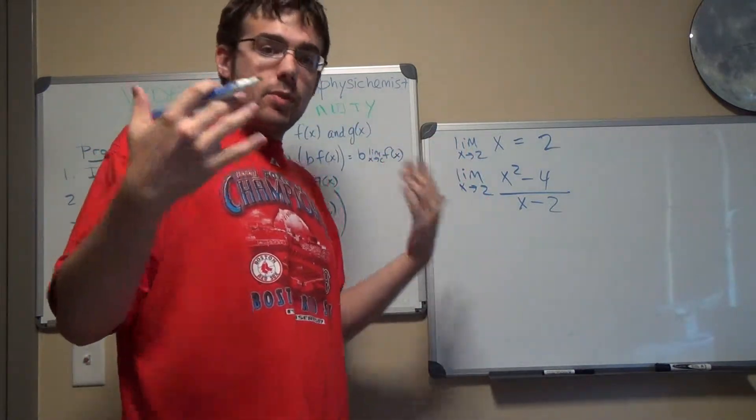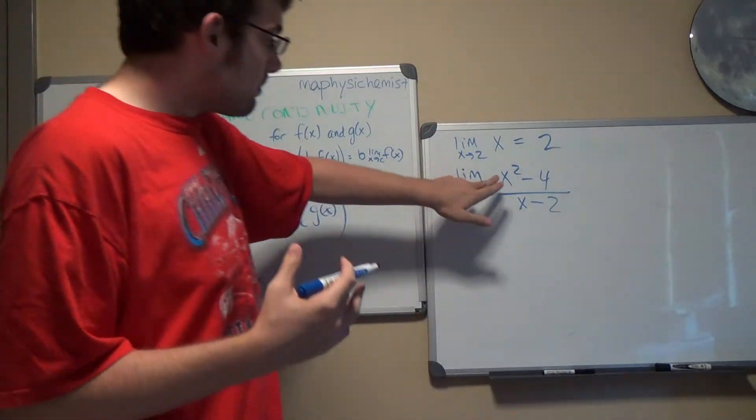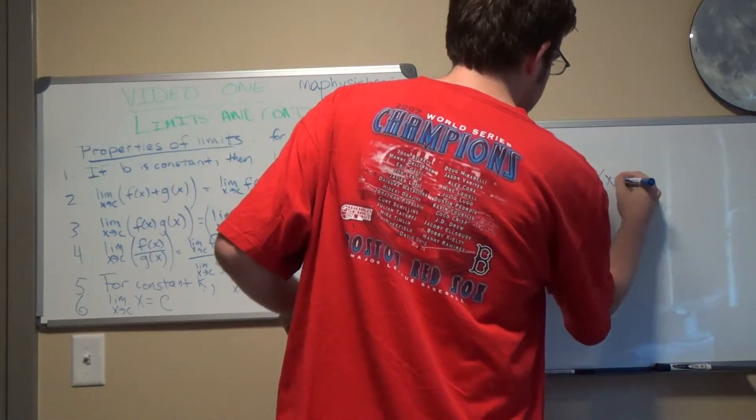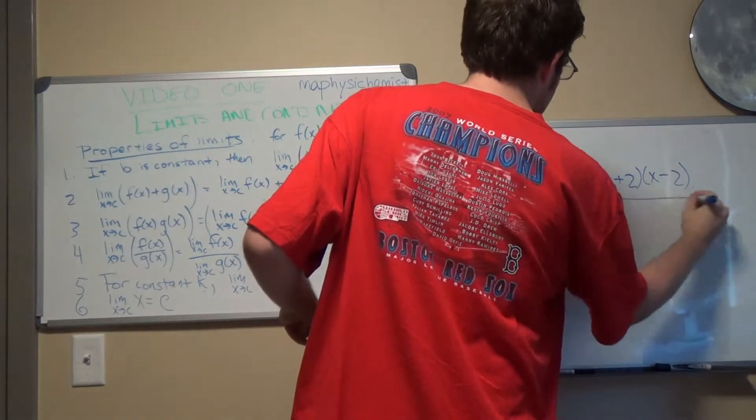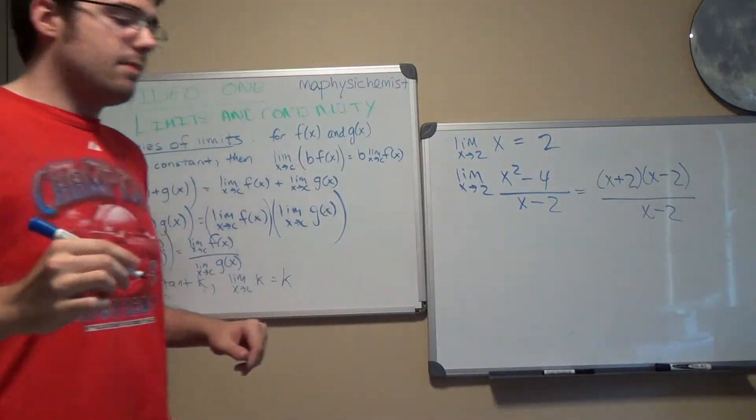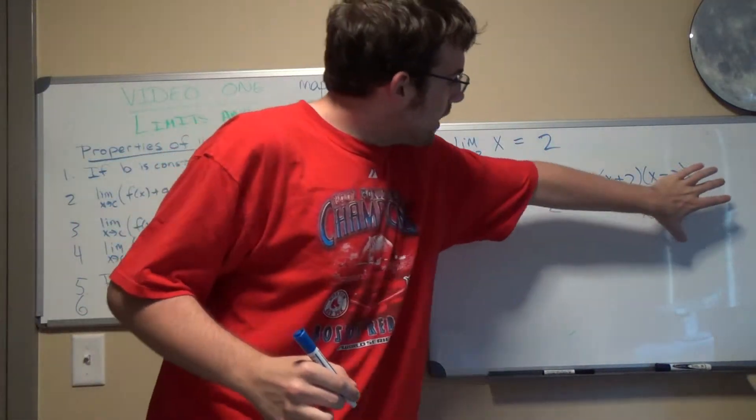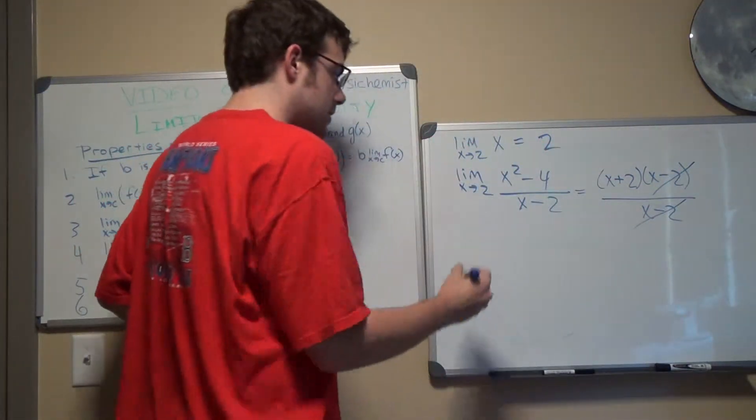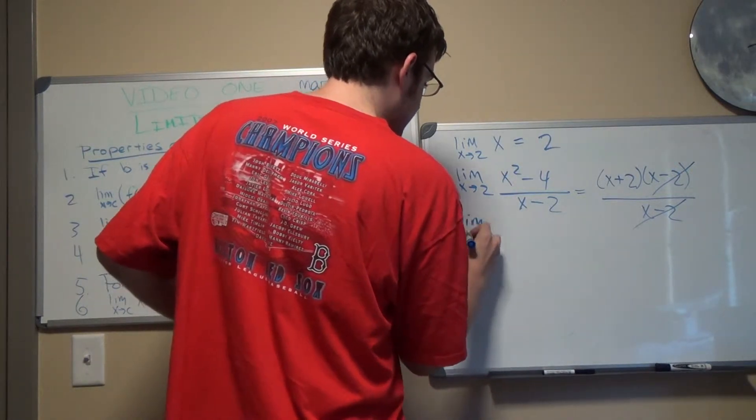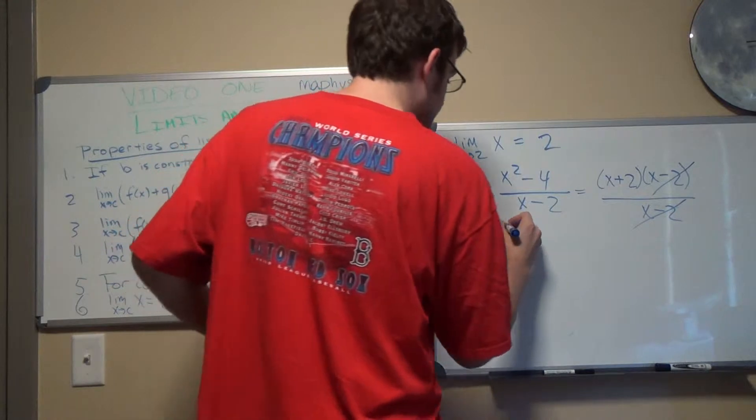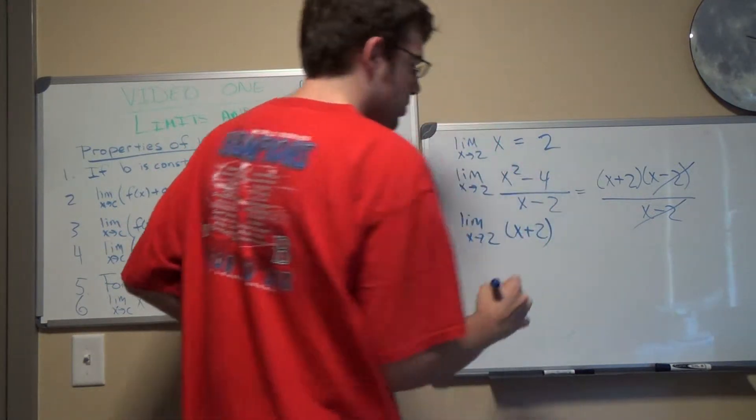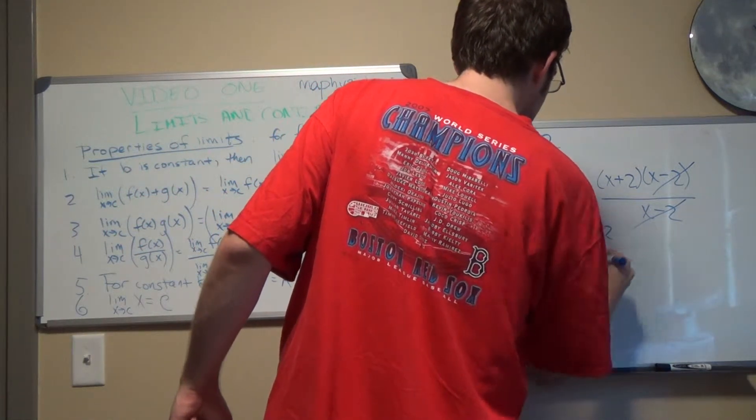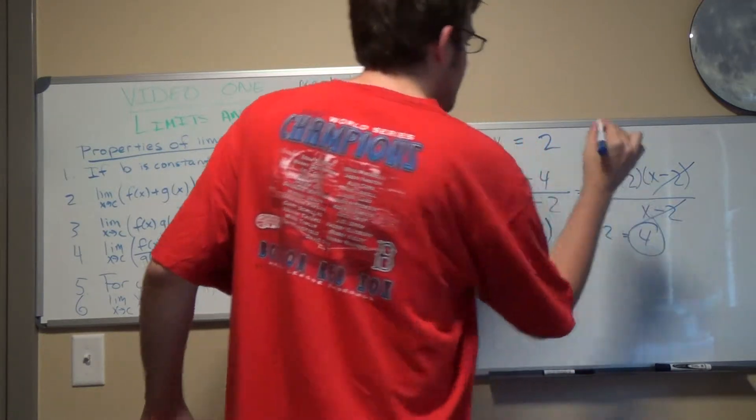But with limits, we can determine the value of this function as x approaches 2. So we can algebraically manipulate this function. We know that x squared minus 4 is the same thing as x plus 2 times x minus 2 divided by x minus 2. We have x minus 2 in the numerator and the denominator. So we can get rid of those. So we can get a limit as x approaches 2 of x plus 2. Now we can plug in 2 into the equation. So we get 2 plus 2 equals 4.